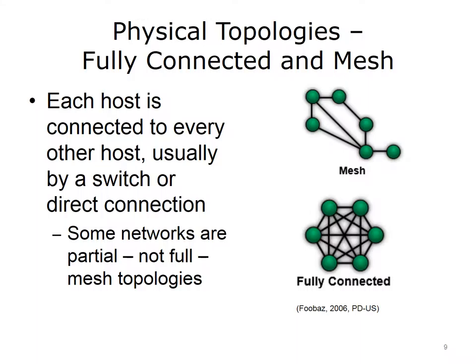Another type of physical topology is mesh. With mesh topologies, each host is connected to every other host in the network by a switch or by a direct connection to another host without the use of a switch. The image on the screen shows a full mesh topology, where each host is directly connected to every other host in the network. This type of physical topology usually relates to routers, not to computers, because when computers are in a full mesh, they are typically interconnected by a switch — all devices connect to the switch, not to each other.